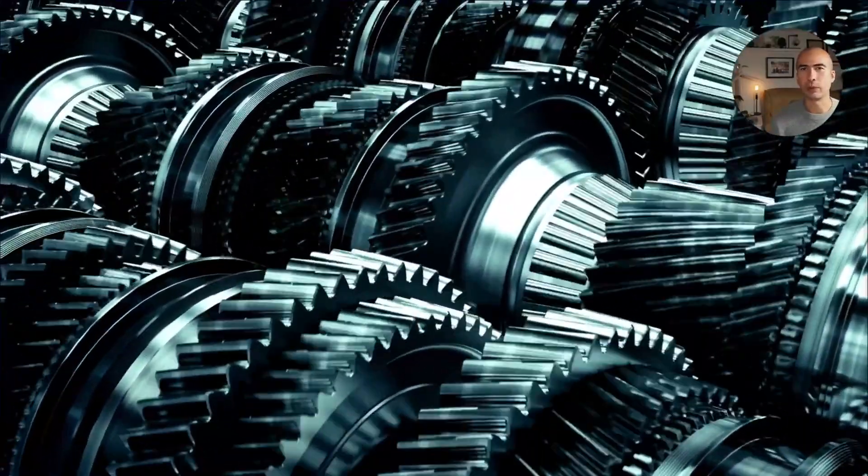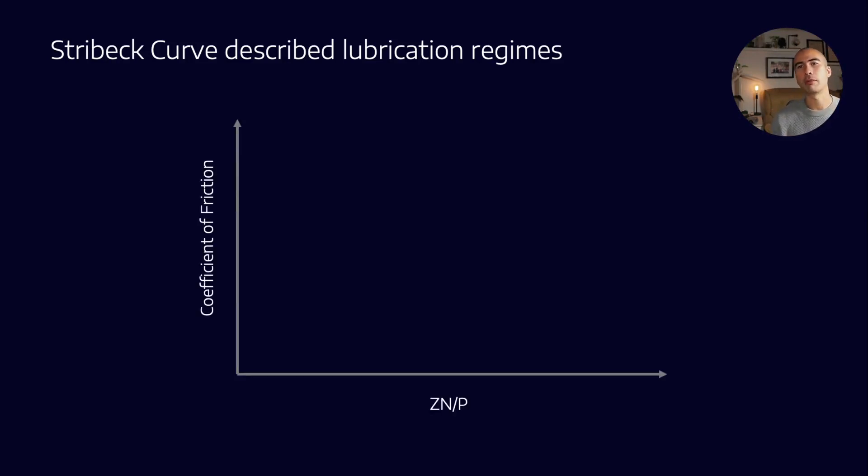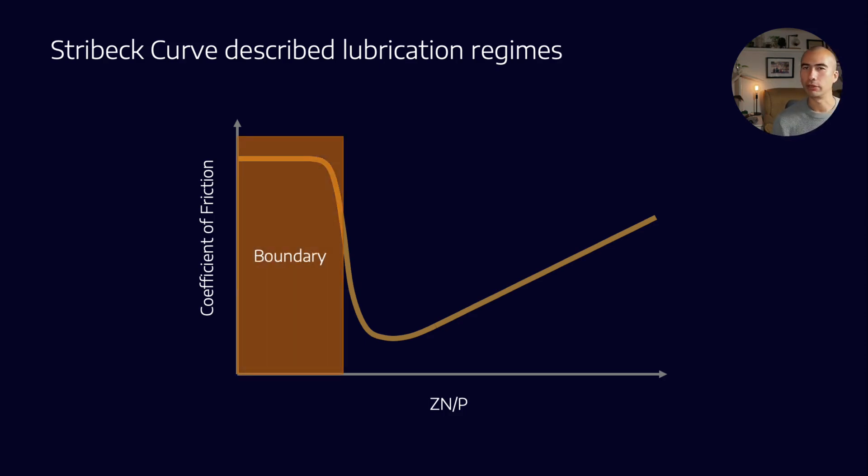And the difference between an anti-wear and an EP additive is not very clear. However, if we talk about the Stribeck curve, it helps us talk about in what lubrication regimes do we need anti-wear additive. So if you'll remember, the Stribeck curve describes all those lubrication regimes. And when you look at a curve of the coefficient of friction versus this non-dimensional ZN/P, what you see is that it reaches a minimum point and then starts to increase again. Now, what are these three regimes?